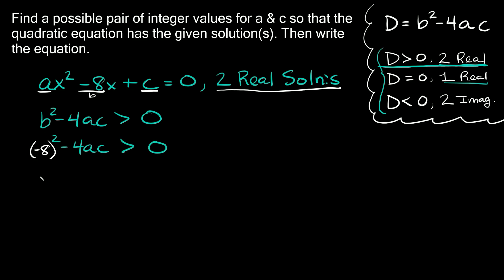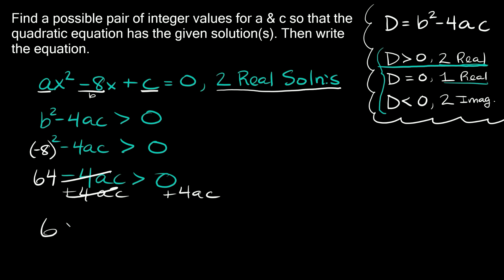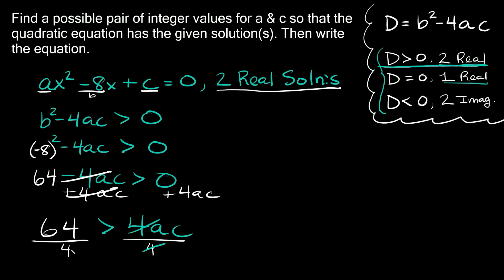Negative 8 squared is positive 64, so we get 64 minus 4ac is greater than zero. To solve for a and c, let's move 4ac to the other side by adding 4ac to both sides — those cancel out, leaving 64 is greater than 4ac. The only time you flip the inequality is if you multiply or divide by a negative number, which we didn't do here. Dividing both sides by 4, we get 16 is greater than ac.